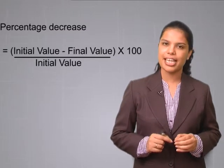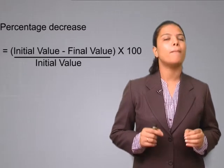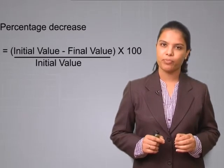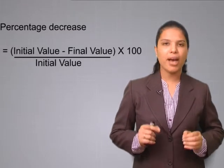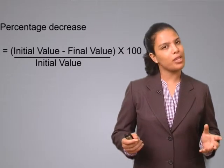Applying the same technique to understand percentage decrease: here the final value is decreasing compared to the initial value. Hence the initial value will be greater than the final value. So the formula slightly reverses and says: percentage decrease = initial value minus final value, divided by initial value, into 100. Observe that the base or comparison is always with the initial or original value, and we multiply by 100 to find the percentage.